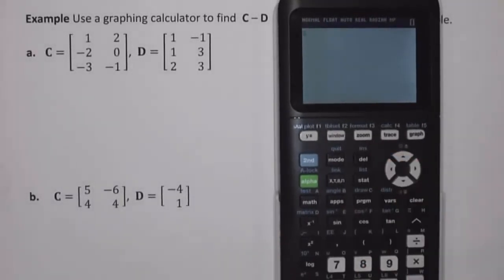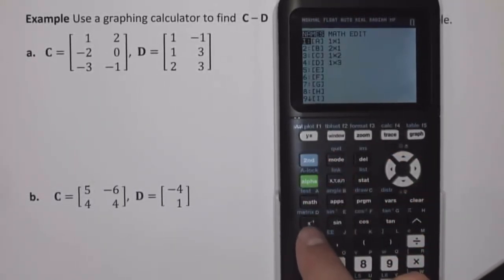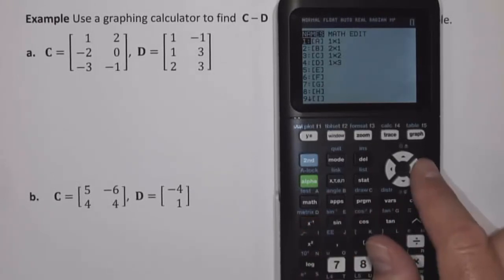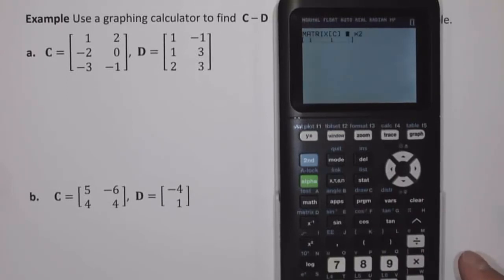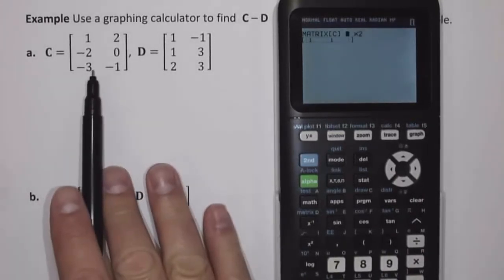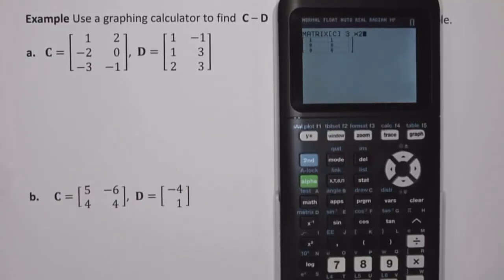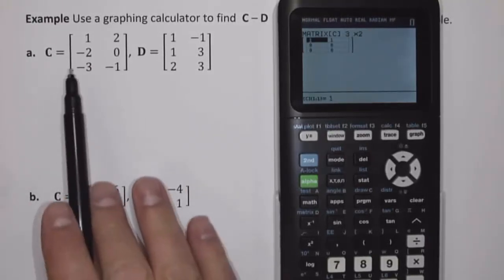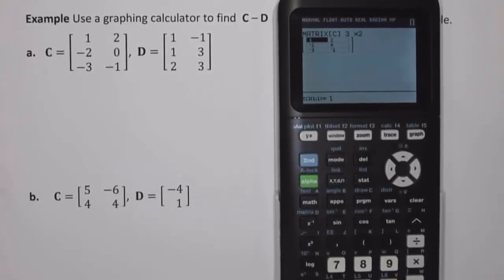I'm going to go to matrix, which is the second of the inverse or reciprocal button. I'm going to go to edit and use matrix C. This is a 3 by 2 matrix — 3 rows, 2 columns — and I'm going to enter the values: 1, 2, negative 2, 0, negative 3, negative 1. So I have matrix C entered into my calculator.